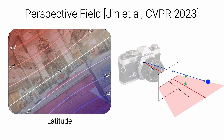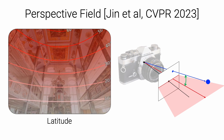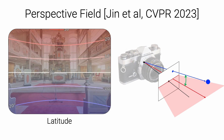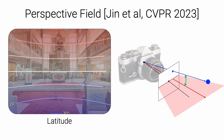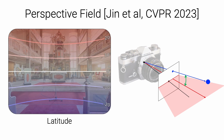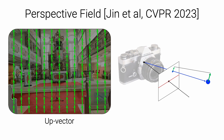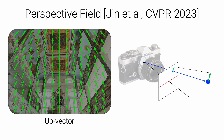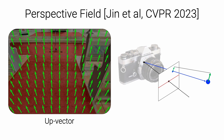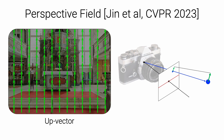We build on top of perspective fields, which are an over-parameterized, pixel-wise representation of the camera parameters. They consist of two components. First, the latitude is the angle between the viewing ray, here shown in blue, and the horizontal plane, here shown in red. This angle is shown in green and is intuitively zero on the horizon line. Second, the up vector is the projection of the up direction into the image plane, shown as a green arrow. It corresponds to the direction of vertical lines, but is not limited to them. This representation is more general and can be inferred in a wider range of environments.